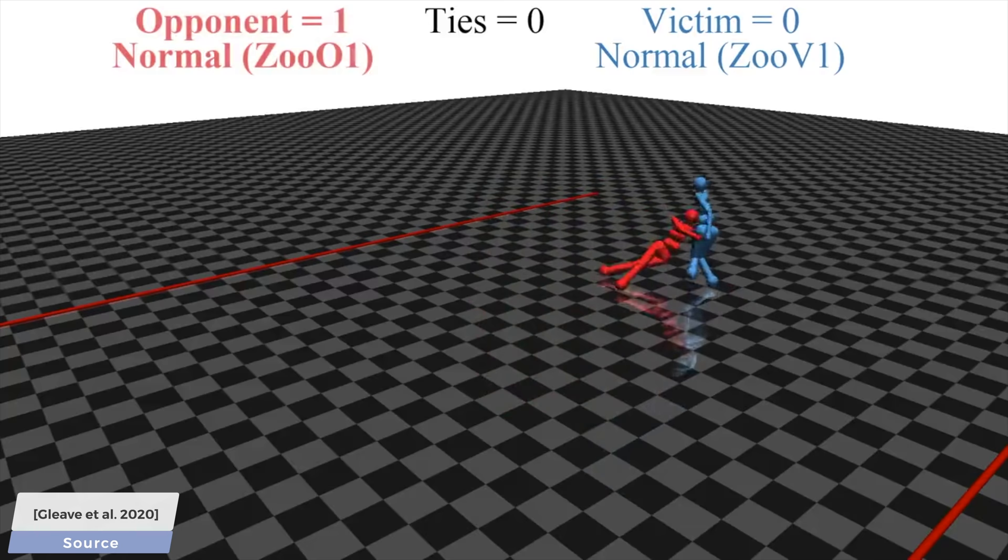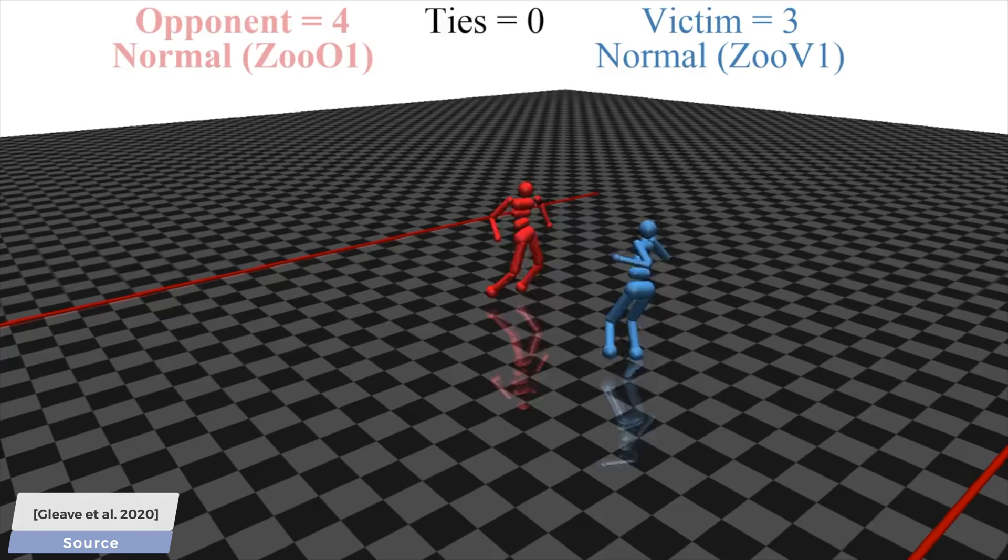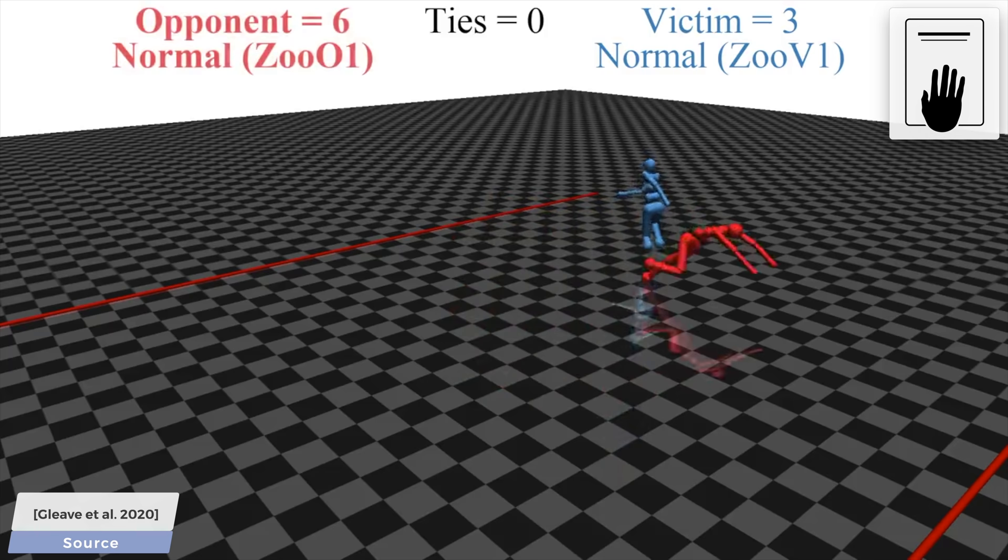This is the you shall not pass game, where the red agent is trying to hold back the blue character and not let it cross the line. Here you see two regular AIs duking it out, sometimes the red wins, sometimes the blue is able to get through. Nothing too crazy here. This is the reference case, which is somewhat well-balanced.